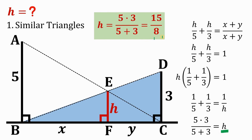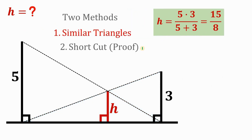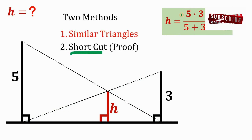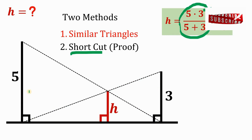Simplifying the left-hand side gives (5 plus 3) over (5 times 3). Taking the reciprocal of both sides gives H equals 5 times 3 over (5 plus 3), which is 15 over 8 units. Now let's have the proof of this shortcut — is this true for any given length?